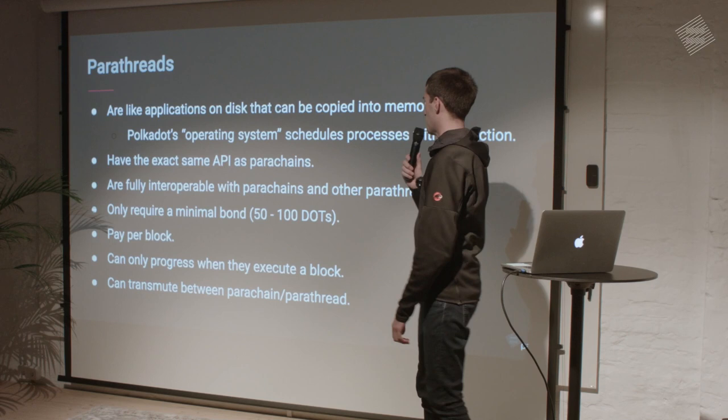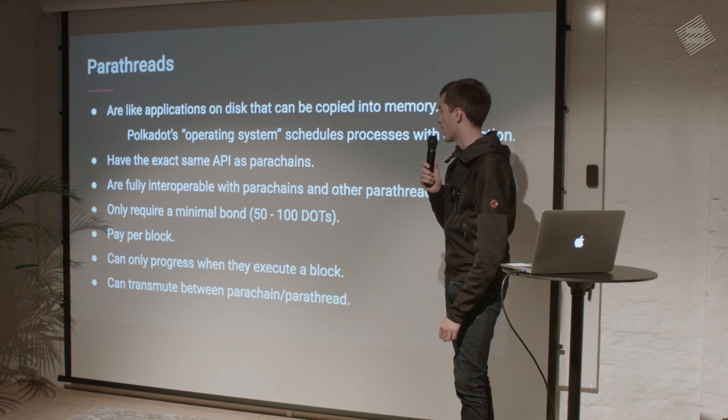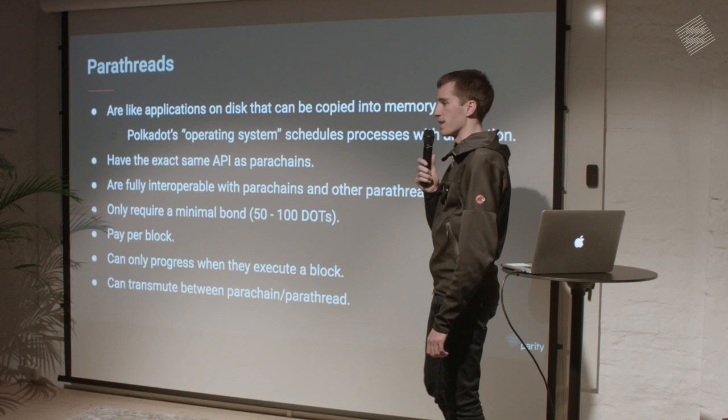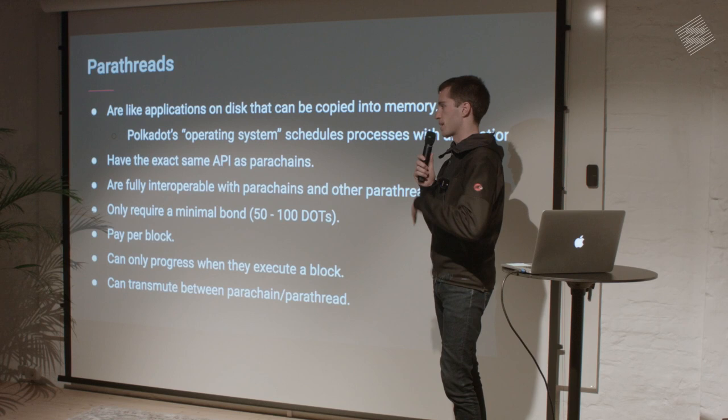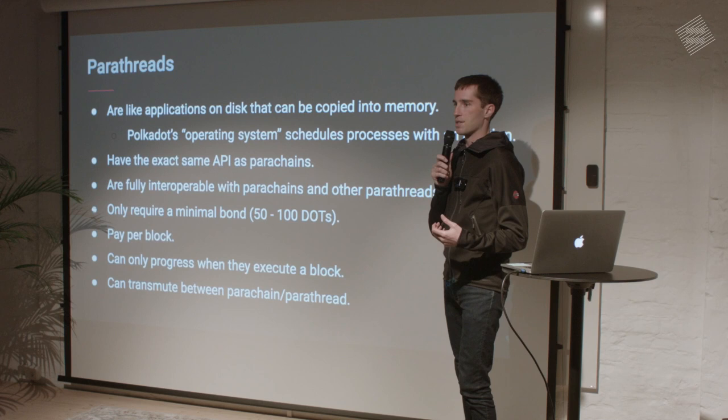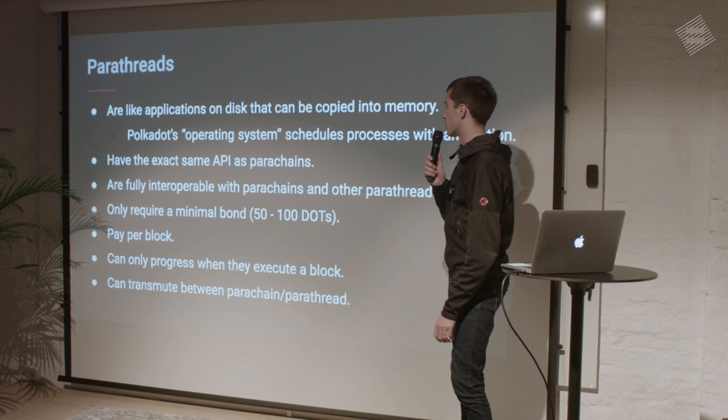That brings us to parathreads. A good analogy is that they're like applications on disk that can be copied into memory when you need them. Polkadot's operating system schedules processes with an auction. Parachains are basically like applications that are in memory, in RAM — they're always accessible, anytime they want to schedule something they have access to the CPU. You can only fit so many applications in memory, but you can fit relatively speaking unlimited applications on disk.